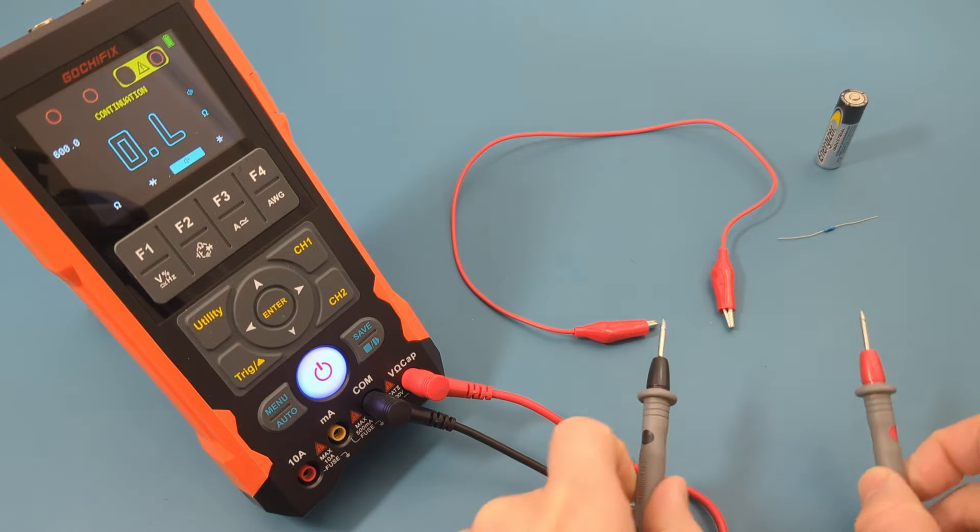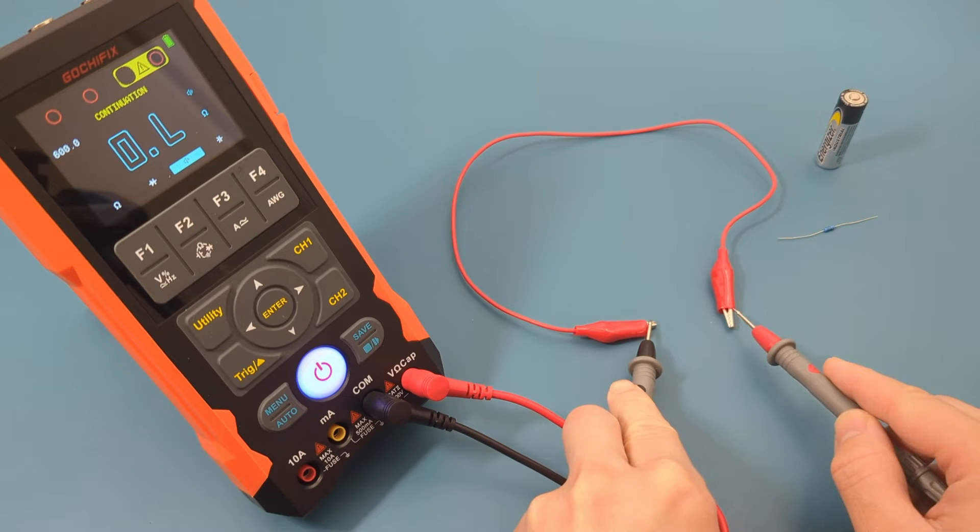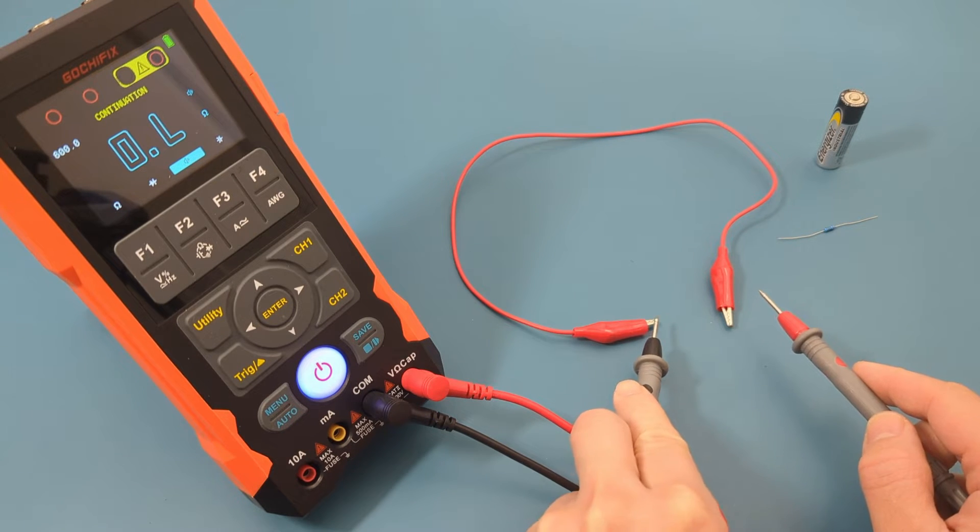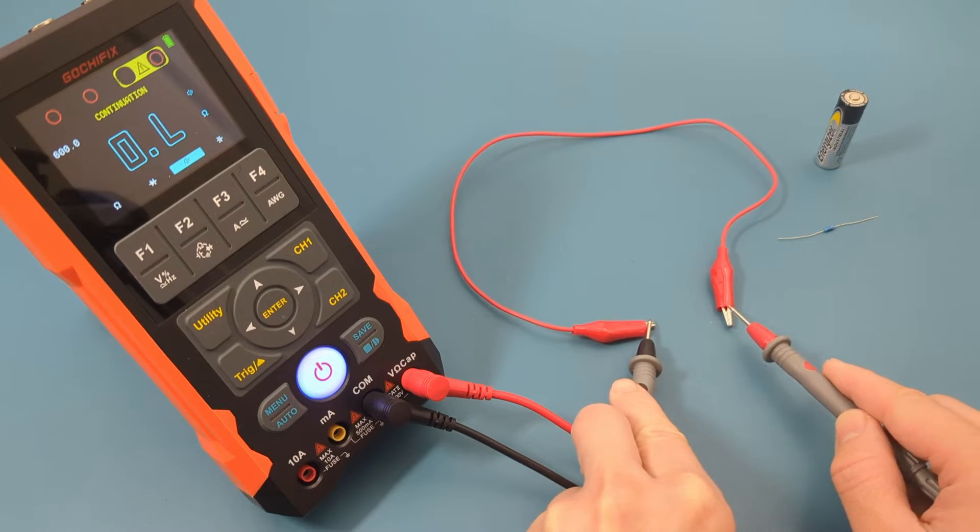Touch the probe leads on each end of the alligator clip. We hear a beep. That means the alligator clip is good since we have continuity.